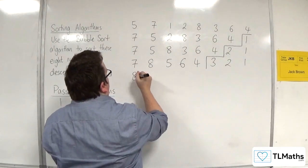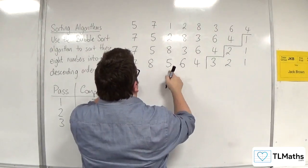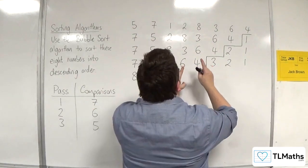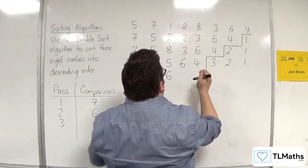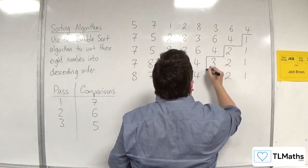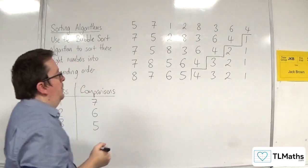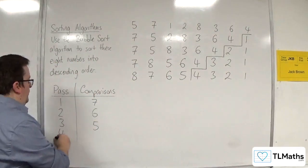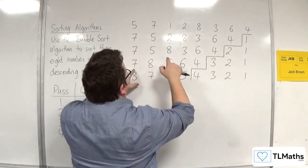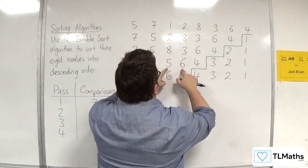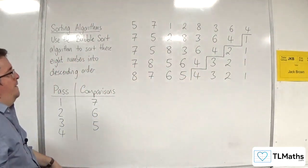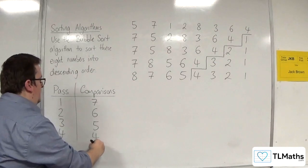Next pass. Seven and eight — eight is larger than seven. Seven and five — seven is larger than five. Five and six — six is larger than five. Five and four — five is larger than four. So four has bubbled to the top. So in the fourth pass, we made one, two, three, four comparisons.